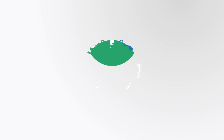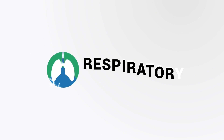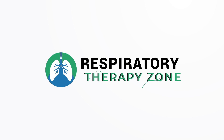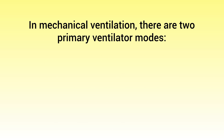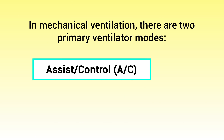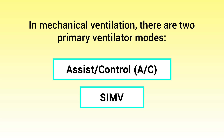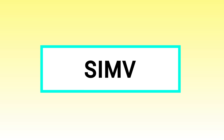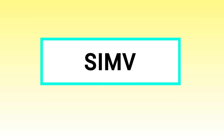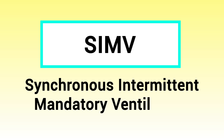In mechanical ventilation, there are two primary ventilator modes: assist control and SIMV, which is the mode we are going to be focusing on in this video. SIMV stands for Synchronous Intermittent Mandatory Ventilation.